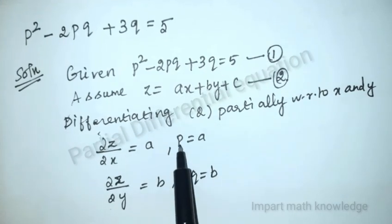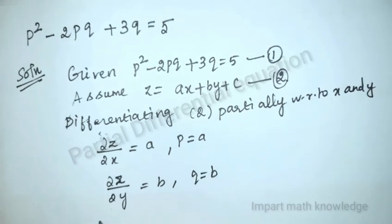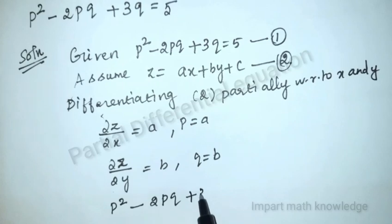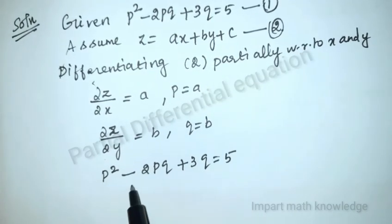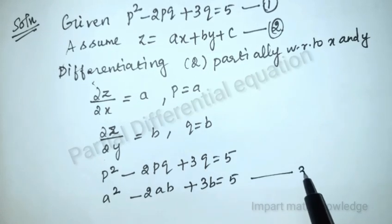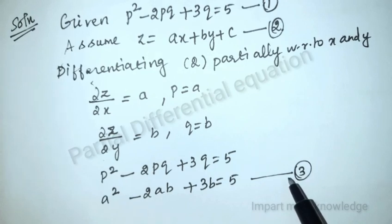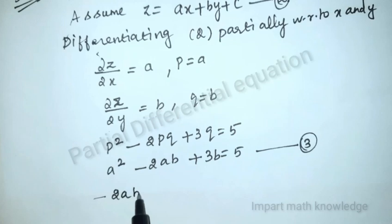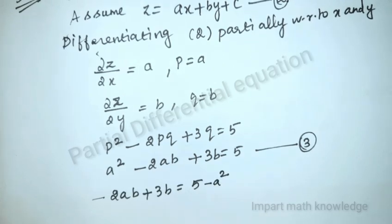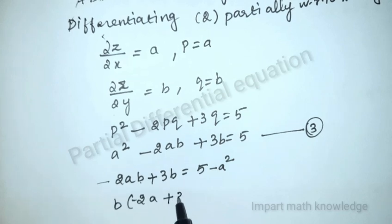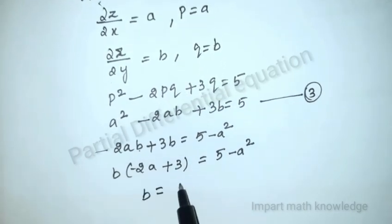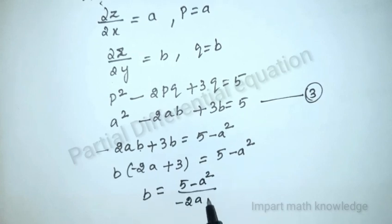In equation 1, replace p with a and replace q with b. We get a² - 2ab + 3b = 5. From this equation, isolate b: -2ab + 3b = 5 - a², so b(-2a + 3) = 5 - a², giving b = (5 - a²) / (3 - 2a).